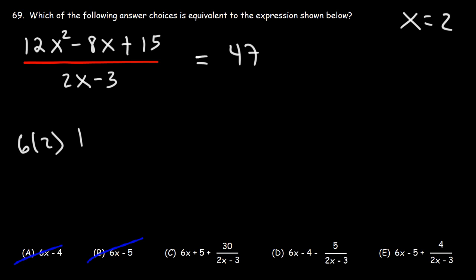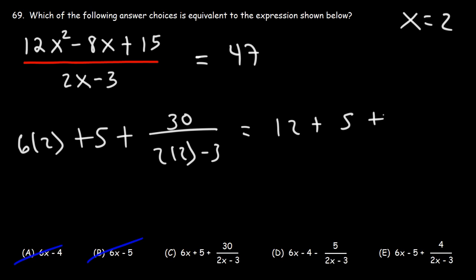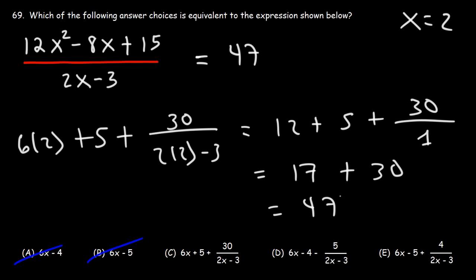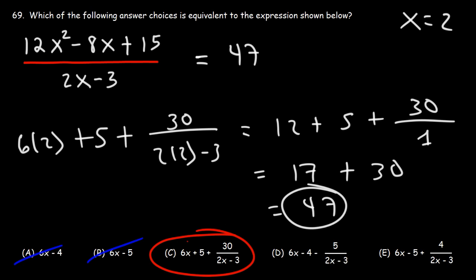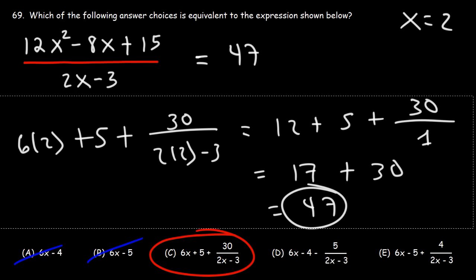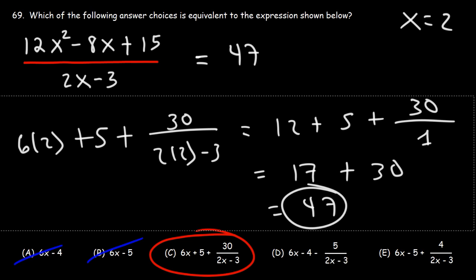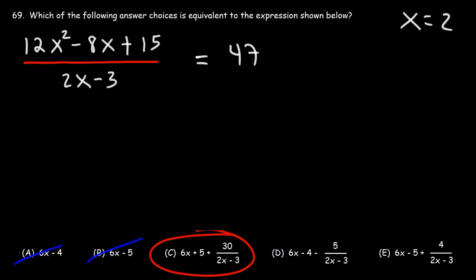Answer choice C is 6 times 2 plus 5 plus 30 over 2x minus 3, or 2 times 2 minus 3. 6 times 2 is 12. 2 times 2 is 4 minus 3, that's 1. 12 plus 5 is 17. 17 plus 30 is 47. So the correct answer is answer choice C. That's one way to solve these types of problems — by plugging in numbers.